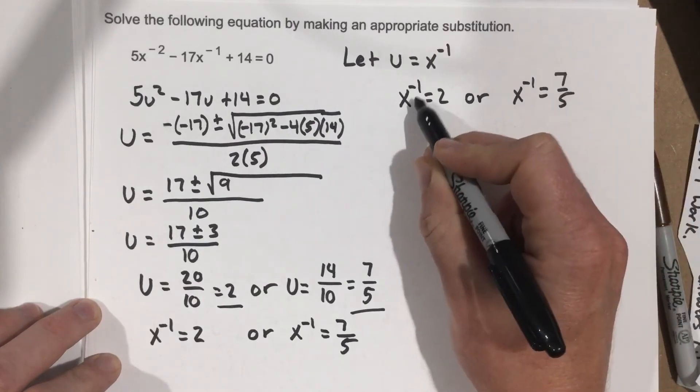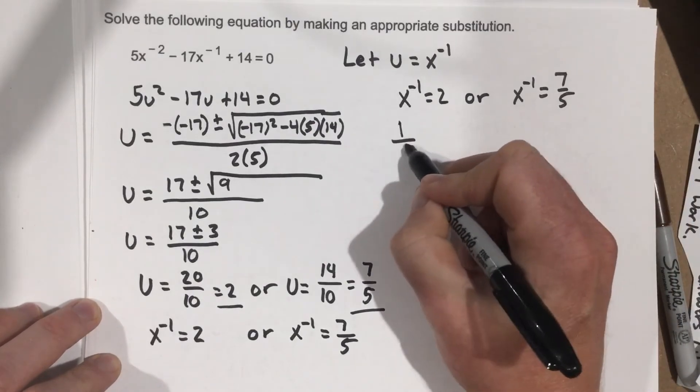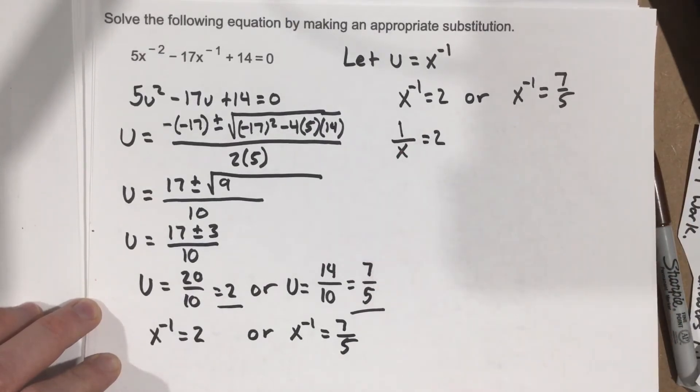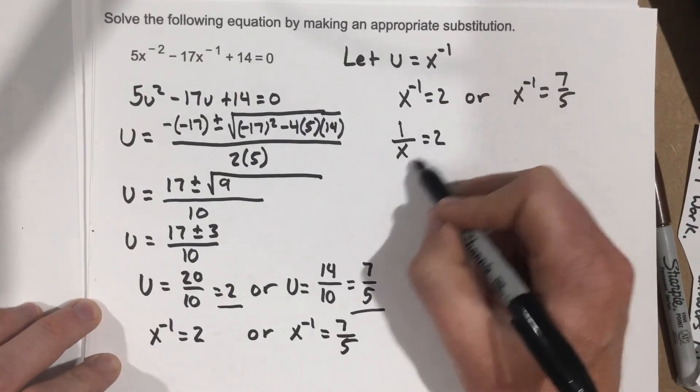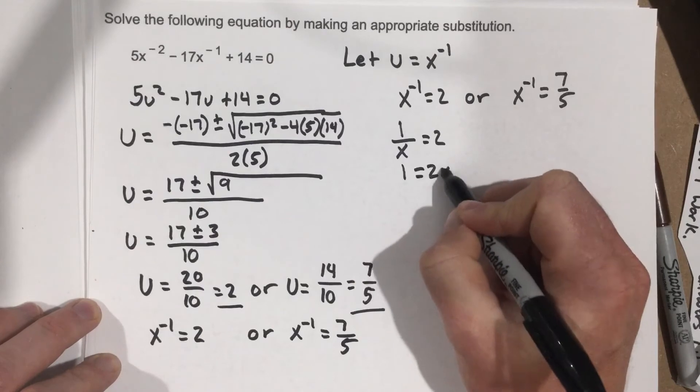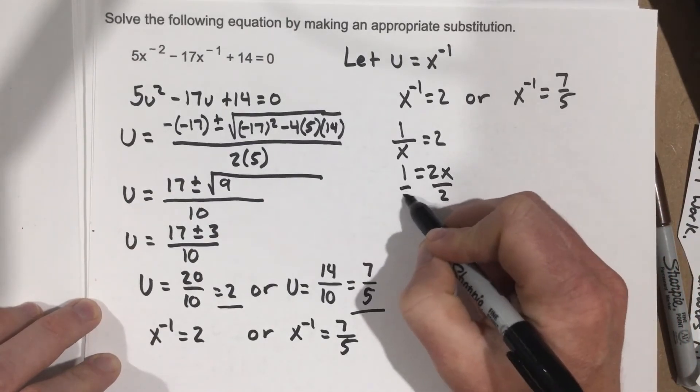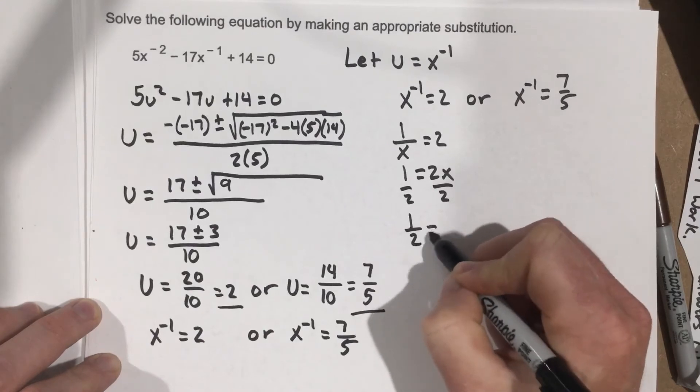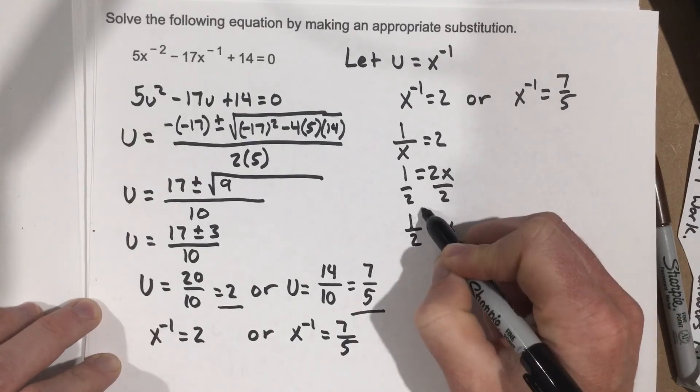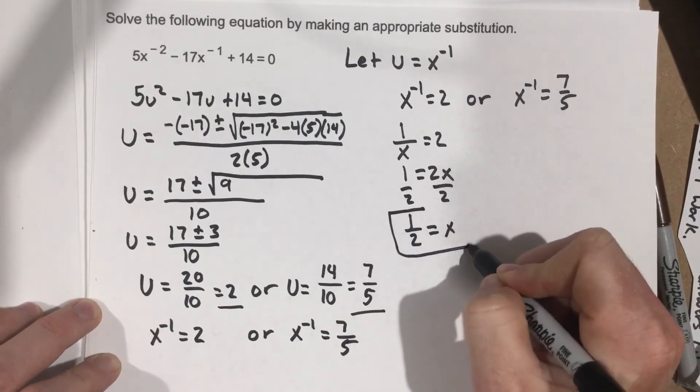So I can say x to the negative 1, I know, is actually 1 over x equal 2. Multiply by x, so I get 1 equals 2x. Divide by 2, so I get 1 half is x. So that's one of the solutions to this problem.